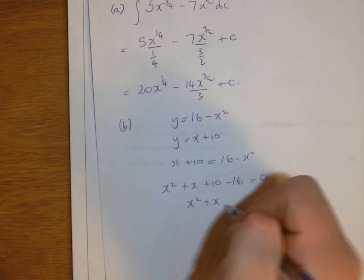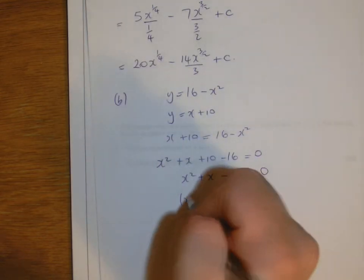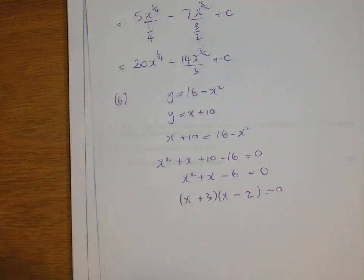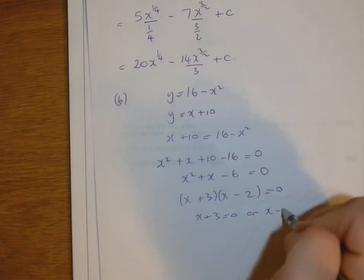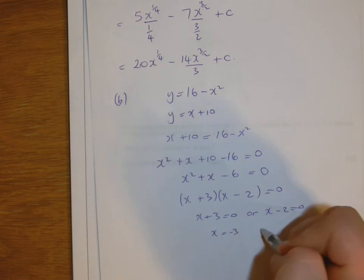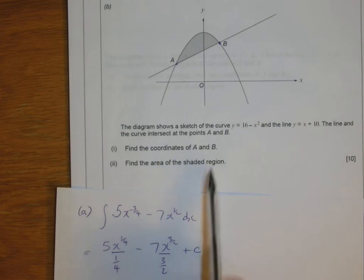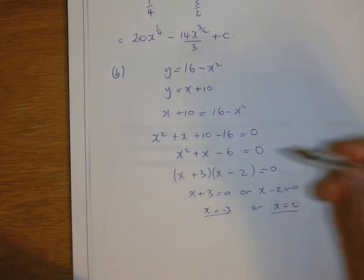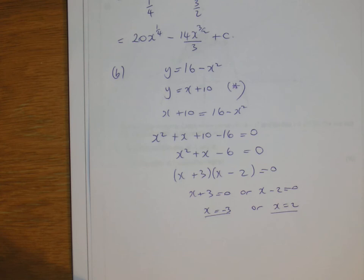This simplifies to x squared plus x minus 6 equals zero — a quadratic equation which we can solve. Factorising gives (x plus 3)(x minus 2), so x plus 3 equals zero or x minus 2 equals zero, meaning x equals minus 3 or x equals 2. It's important — the question asks for coordinates of A and B, so it's not enough just to have the x values; you also need the y values.